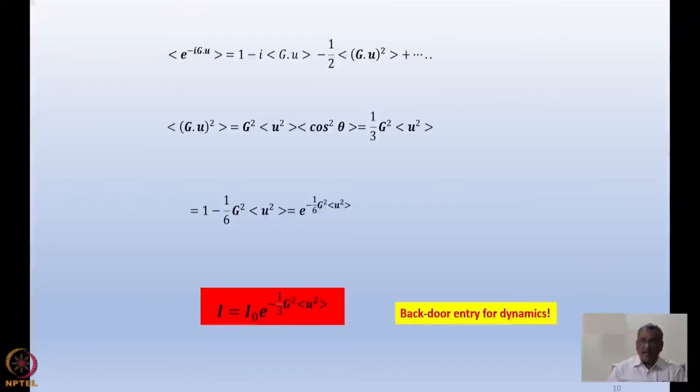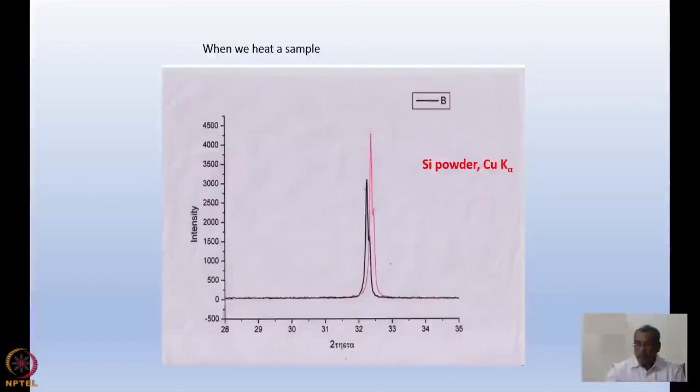Basically I am trying to evaluate the intensity or the structure factor for a lattice. And the finite temperature brings in dynamics and also this factor. Just to give you a taste of it, I had done the experiment with silicon powder using copper K alpha radiation.